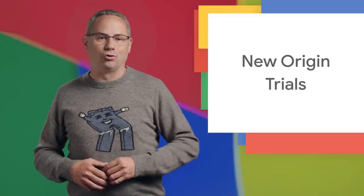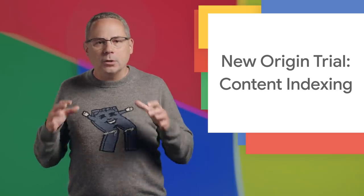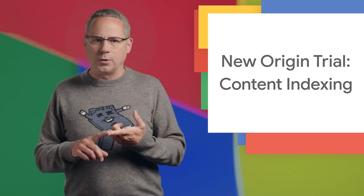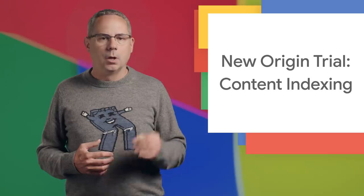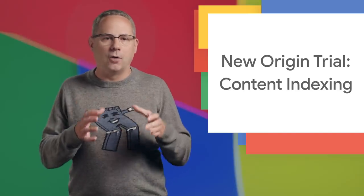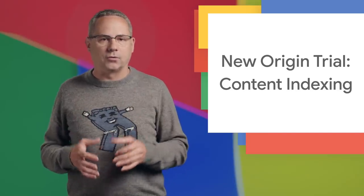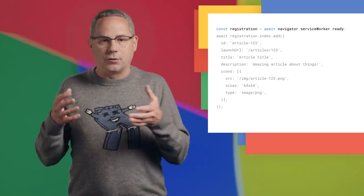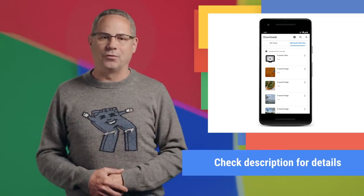There are a bunch of new origin trials that start in Chrome 80. First, how do you let users know what content you've cached in your PWA? There's a discovery problem here — will they know to open your app or what content is available? The Content Indexing API is a new origin trial that allows you to add URLs and metadata of offline-capable content to a local index maintained by the browser and easily visible to the user. To add something to the index, I need to get the service worker registration, then call index.add and provide metadata about the content. Once the index is populated, it's surfaced by the browser and shown in a dedicated area of Chrome for Android's download page. Check out Jeff's post on web.dev for complete details.